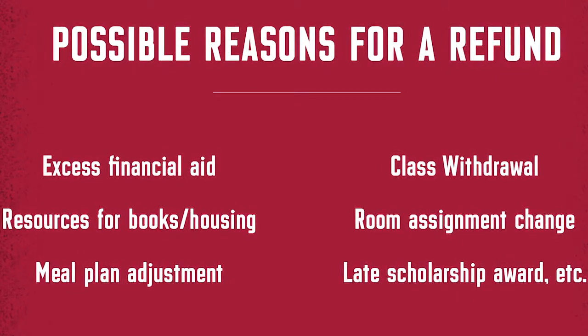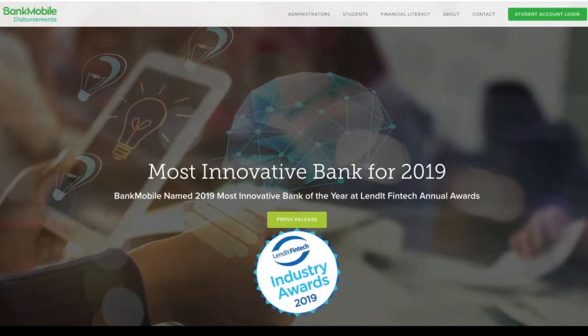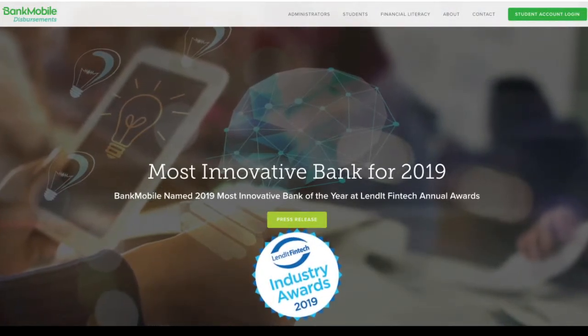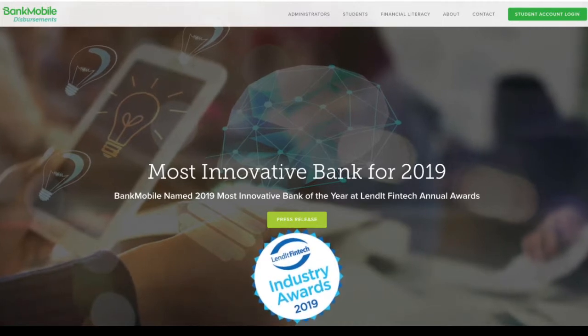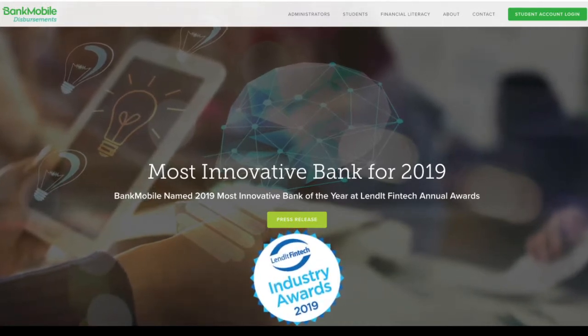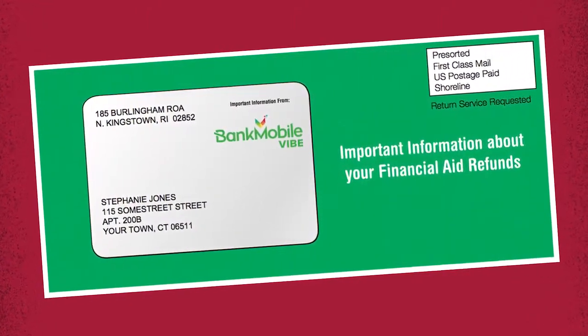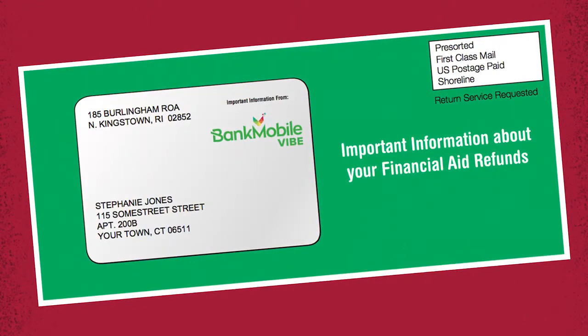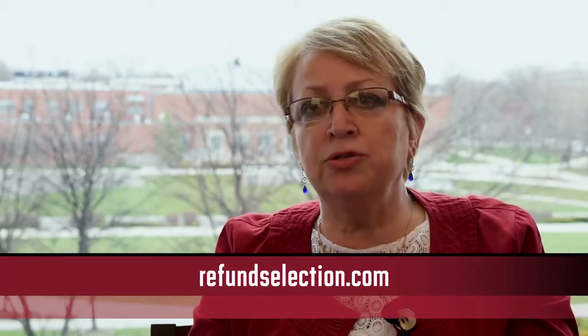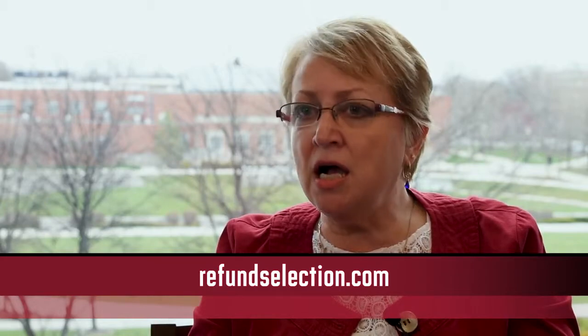Or it could be a scholarship that came in later in the year. UND has partnered with Bank Mobile Disbursements to deliver refunds to our students. Beginning in July, new students will receive a large green envelope that looks like junk mail delivered to their home. Inside is a refund selection kit with a personal code.